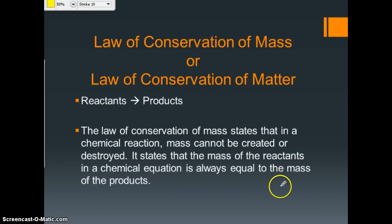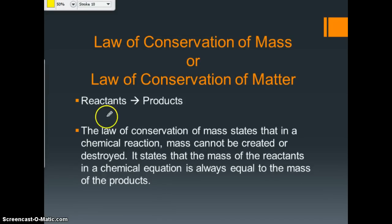Next vocabulary word: Law of Conservation of Mass, or Law of Conservation of Matter — same thing. Reactants yield products. The Law of Conservation of Mass states that in a chemical reaction, mass cannot be created or destroyed. It states that the mass of the reactants in a chemical equation is always equal to the mass of the products. So if I say I have 10 grams of reactants, how many grams of products do I have? 10 — that's it.